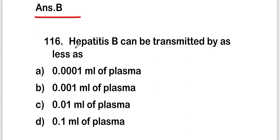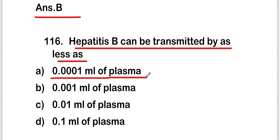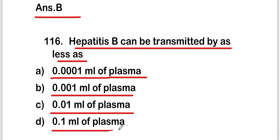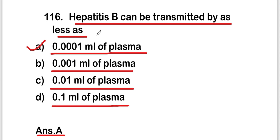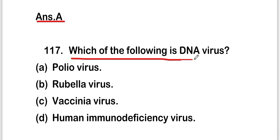The next question is: hepatitis B can be transmitted by as little as — 0.0001 ml of plasma, 0.001 ml of plasma, or 0.01 ml of plasma? The right answer is option A, that is 0.0001 ml of plasma. Hepatitis B can be transmitted by as little as 0.0001 ml of plasma.